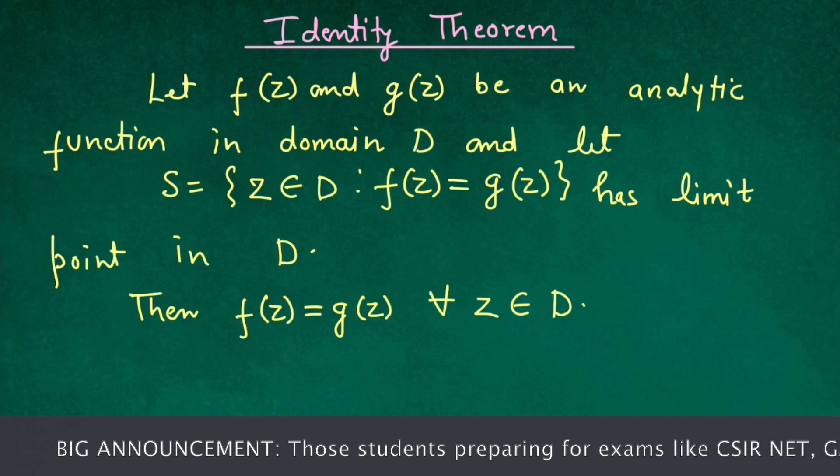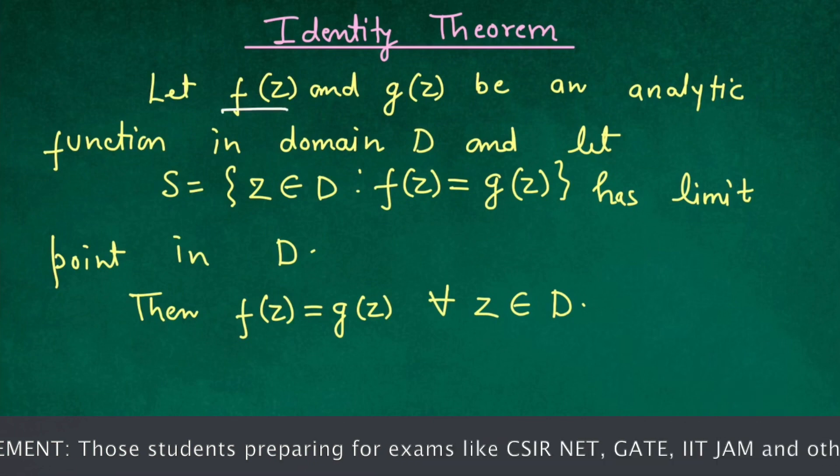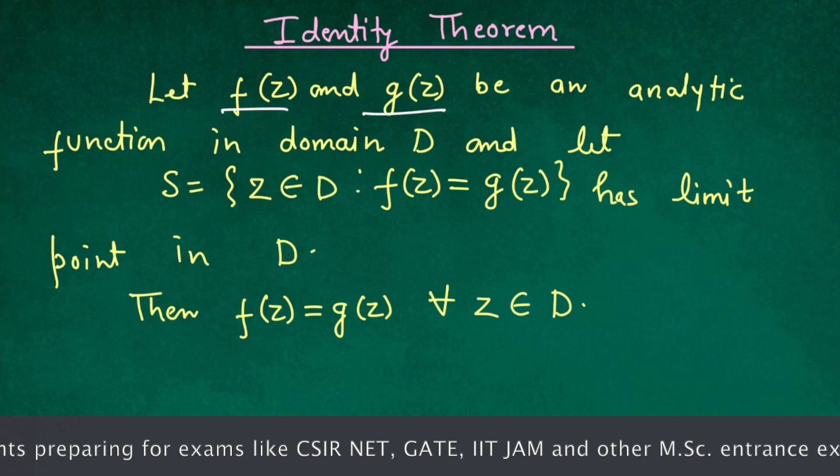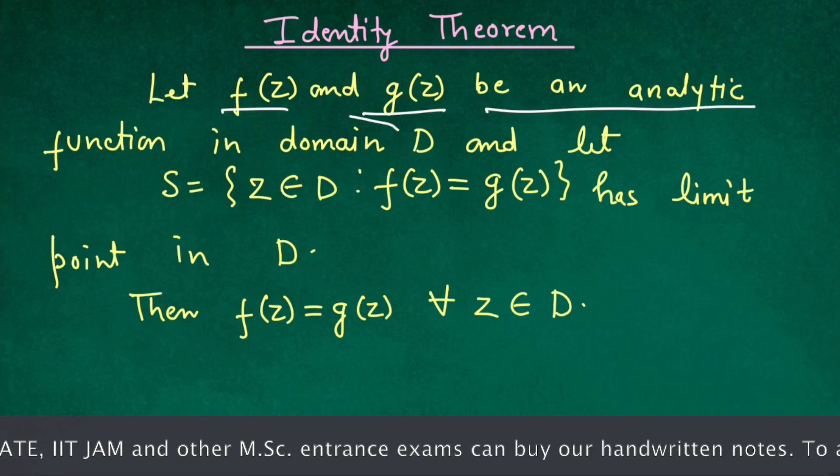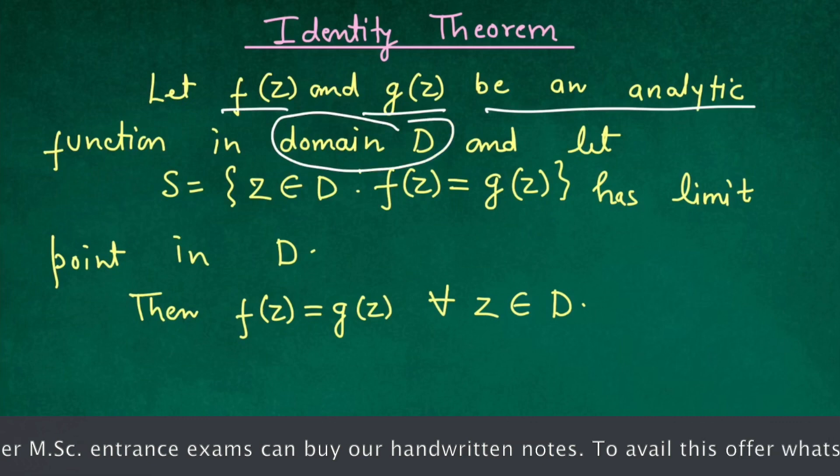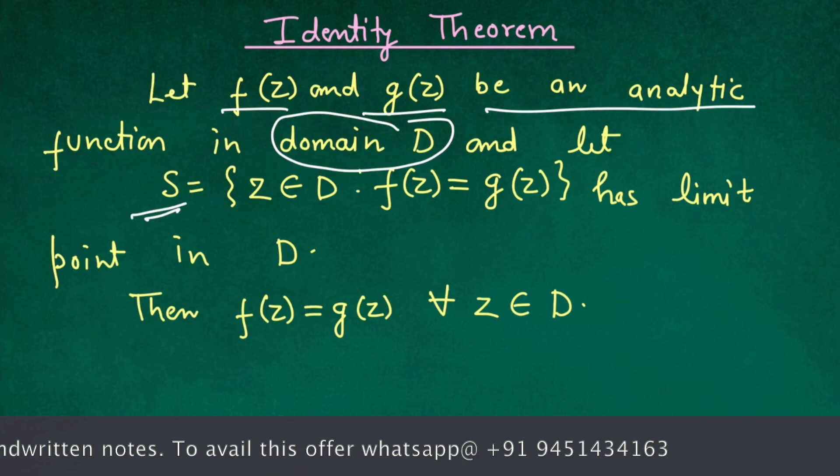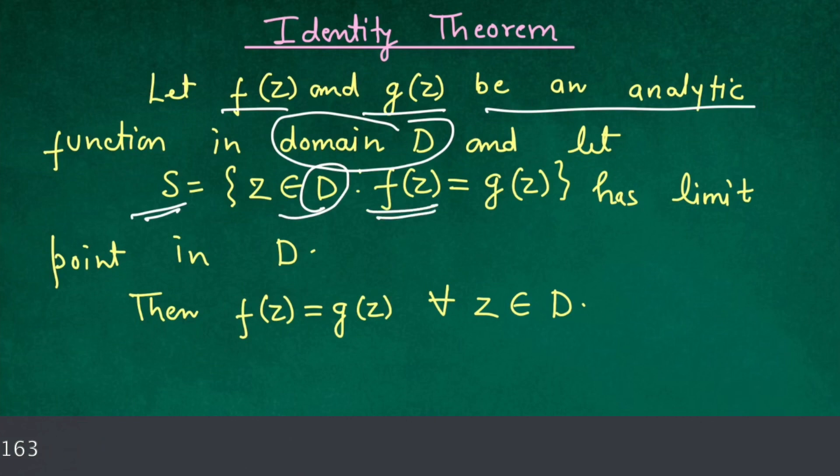This theorem says that if we have two functions f(z) and g(z) and they both are analytic in some domain D, and if we form some set S such that this set contains those elements of set D such that f(z) equals g(z), and this set has limit point in D...